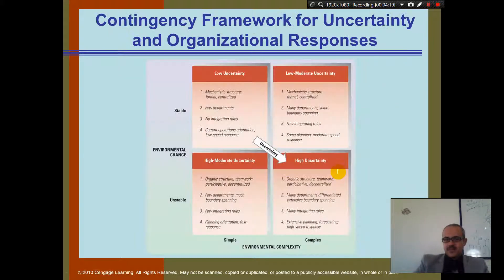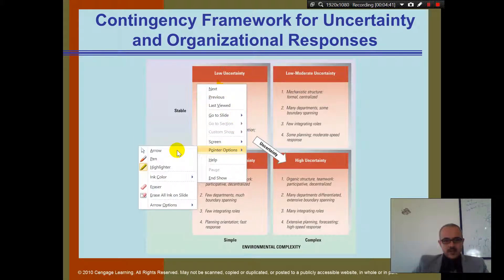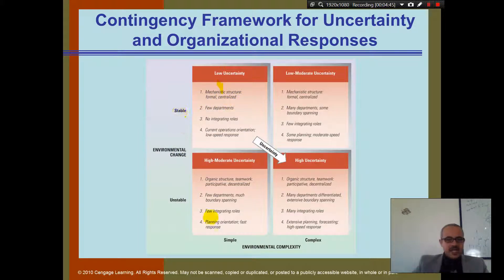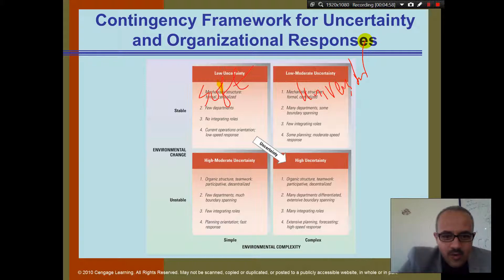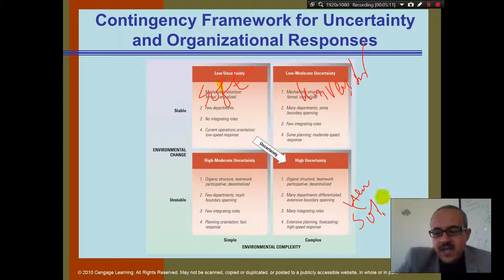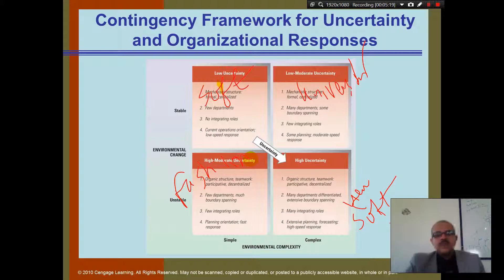Let's revisit the stable/unstable and simple/complex matrix from the previous session. In the stable-simple quadrant we had a manufacturing facility — soft drinks like Pepsi. In the stable-complex quadrant we had a university. In the unstable-complex quadrant we had technology companies like Yemen Soft. And in the unstable-simple quadrant we had the fashion industry.